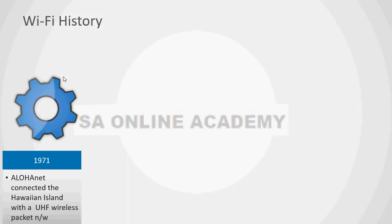AlohaNet, also known as Aloha, was a pioneering computer networking system developed at the University of Hawaii. They connected the Hawaiian islands with a UHF — Ultra High Frequency — wireless packet network. Since no spectrum was allocated at that time, they used UHF wireless technology to connect the university and the Hawaiian islands.